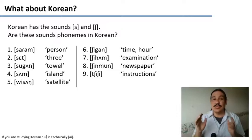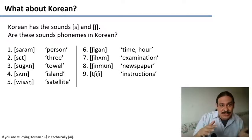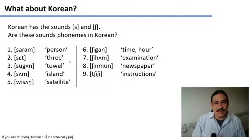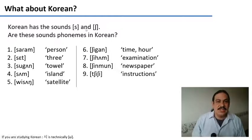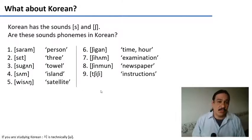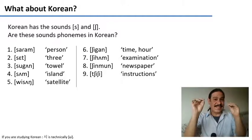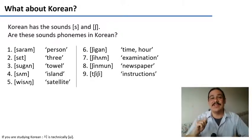Now let's look at these two sounds in a different language — Korean. These are nine words from Korean. For example, we have saram for 'person', set for 'three', and shigan for 'time' or 'hour'. My first question to you is: do you see any minimal pairs between /s/ and /ʃ/ in this Korean data set? Are there any words that are identical except that one has /s/ and the other has /ʃ/? Please pause the video and take a look.